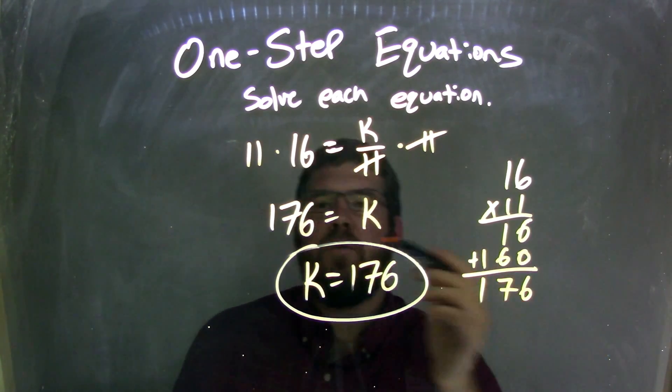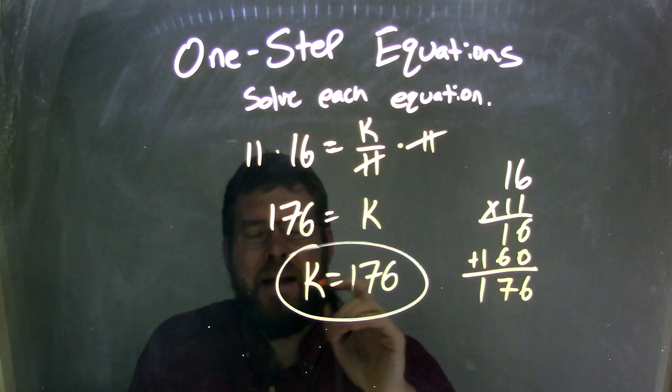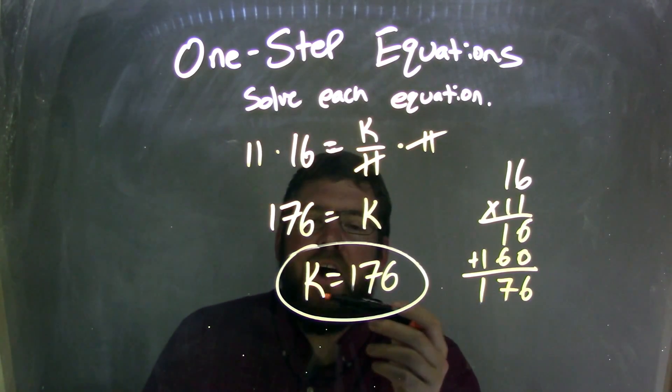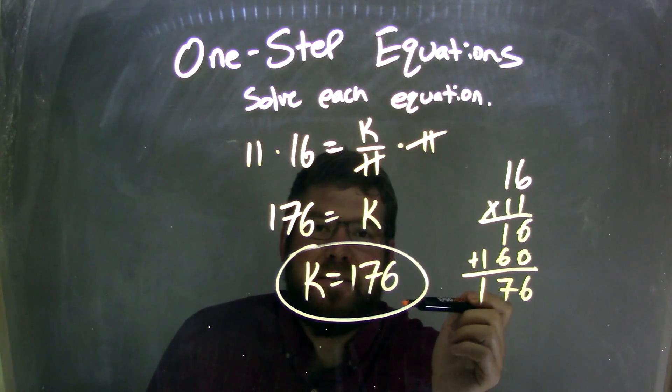So we have 176 here. We have 176 equals k. I rearrange it with k first, looks a little cleaner, and so we have our final answer of k equals 176.